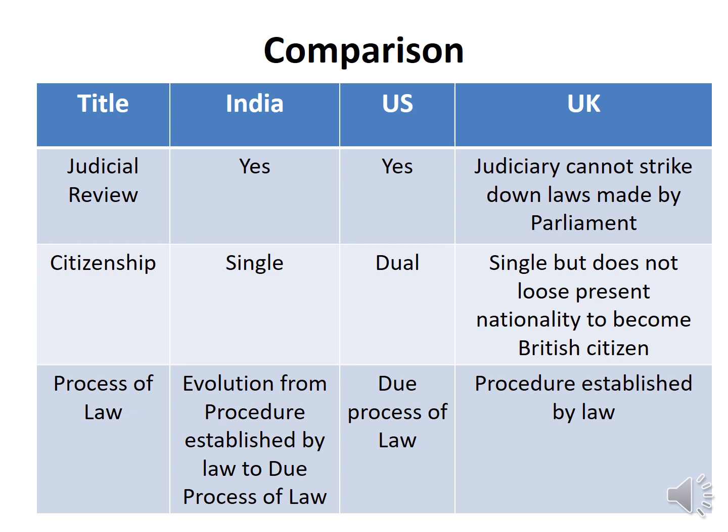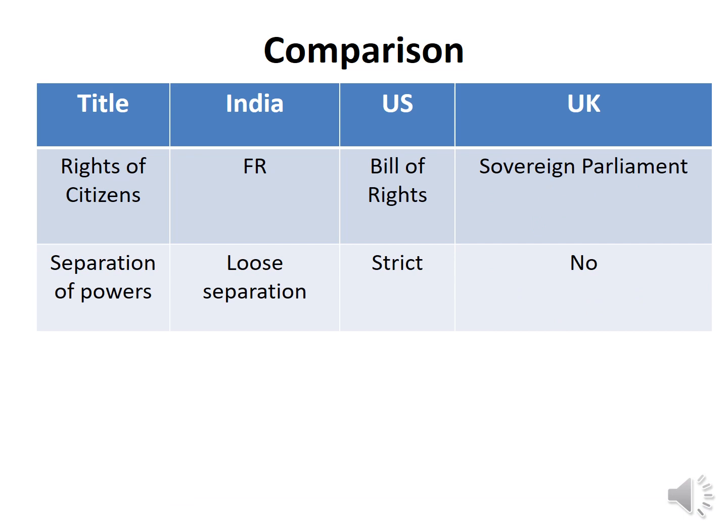So due process requires not only reasonable procedural grounds but also substantive lawfulness. More details will be available in the linked lecture in the description box. Regarding rights: the US has a Bill of Rights. In the UK, with parliamentary supremacy, Parliament can place any right — there is a loose separation of powers in India, where the executive is responsible to the legislature.